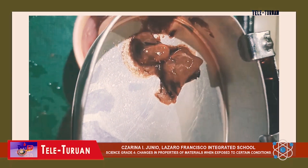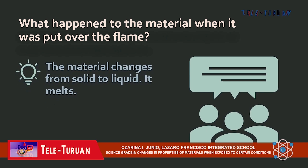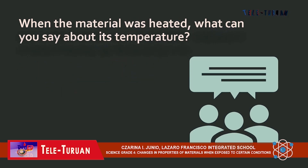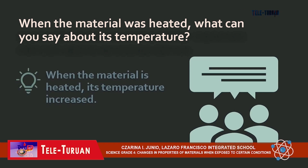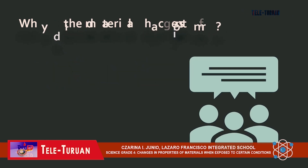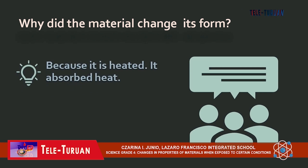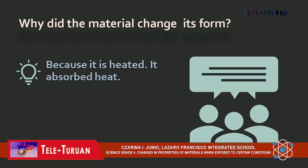Okay kids, let's answer the following questions. What happened to the material when it was put over the flame? The material changes from solid to liquid — it melts. When the material was heated, what can you say about its temperature? When the material is heated, we automatically expect that the temperature increases. Why did the material change its form? Because it is heated — it absorbs heat.